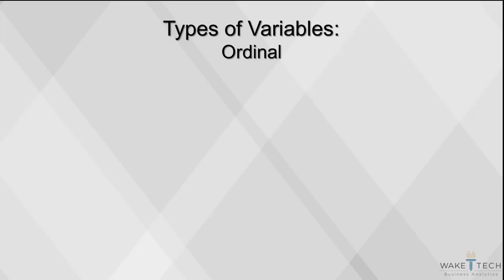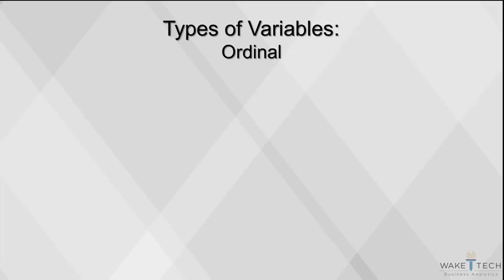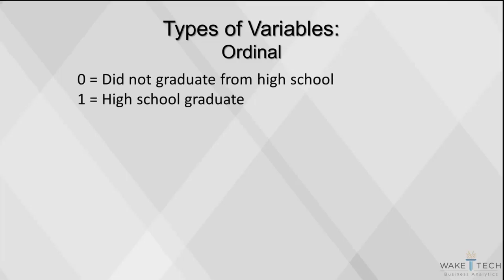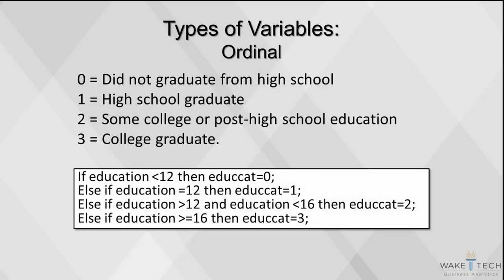The coding process is similar with other categorical variables. For the variable education, we might code as follows: 0 equals did not graduate from high school, 1 equals high school graduate, 2 equals some college or post-high school education, and 3 equals college graduate. Note that for this ordinal categorical variable, we need to be consistent with the numbering, because the value of the code assigned has significance — the higher the code, the more educated the respondent is. In SAS, we would convert years of education to education categories like this.